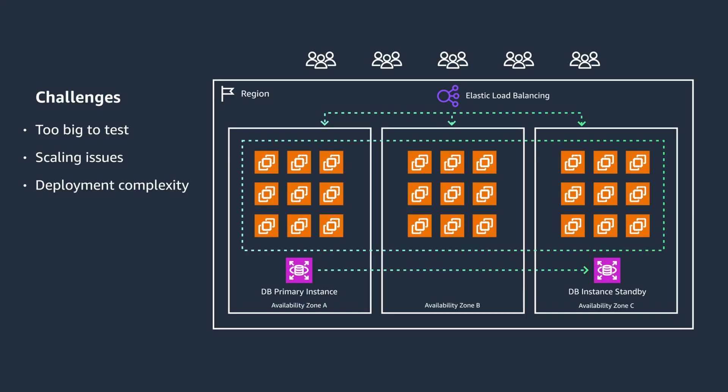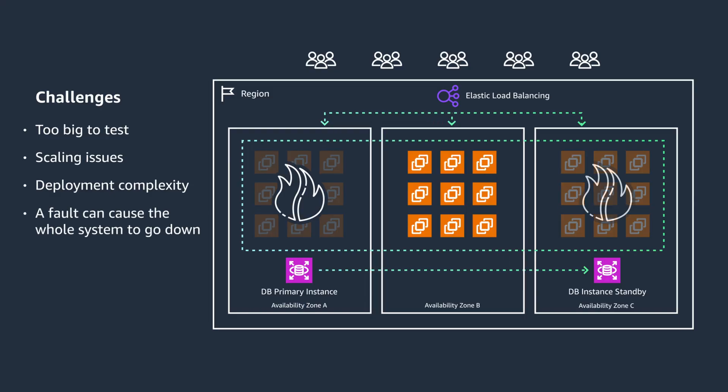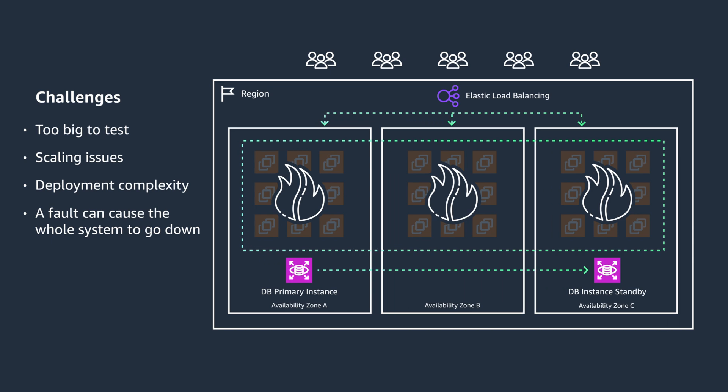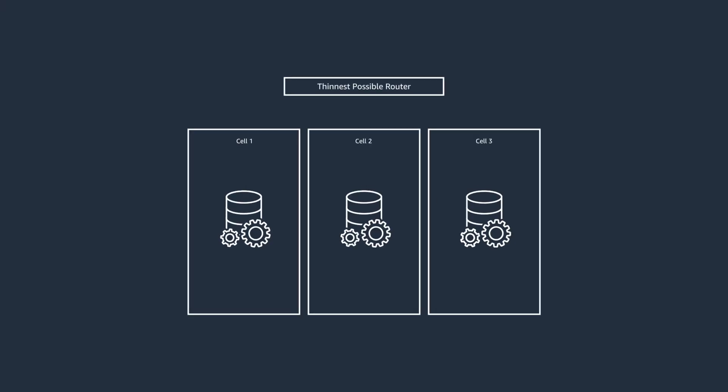These challenges can occur for a number of reasons, such as bad data, infrastructure faults, and other unlikely scenarios. So how can you effectively execute fault containment while scaling to meet customer needs? What can you do to reduce the risks during deployments and improve resiliency? These pain points can be mitigated by implementing cell-based architectures.